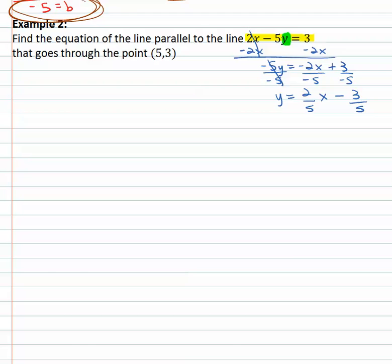Now what do we care about on this parallel line? We care about the slope. So if y equals mx plus b, we're looking for the slope. The slope here is two-fifths. We really don't care what the y intercept is. Parallel lines have the same slope, so our slope is also going to be two-fifths.